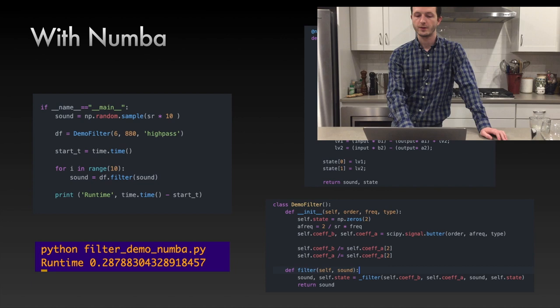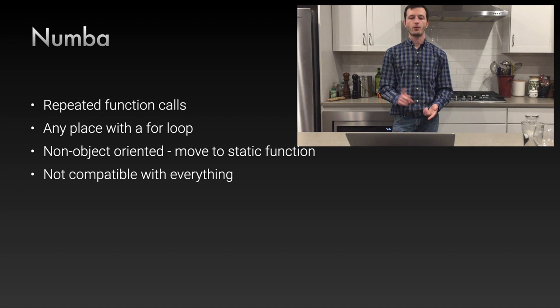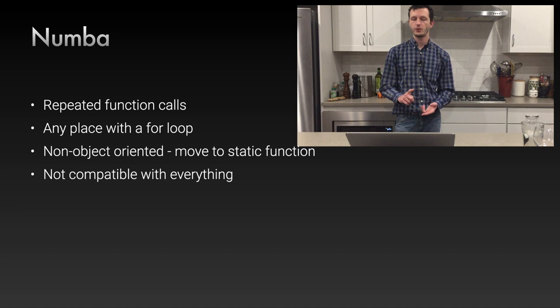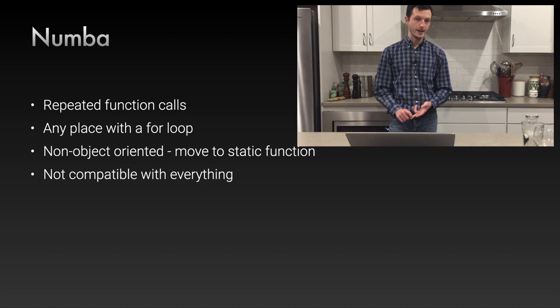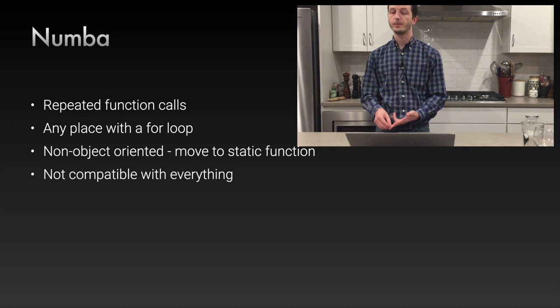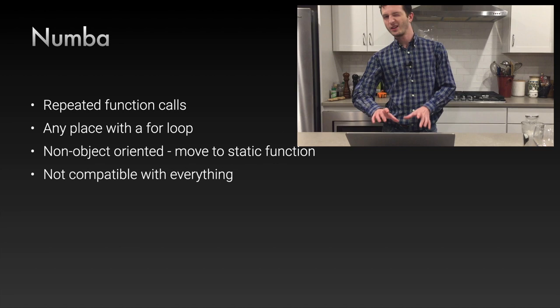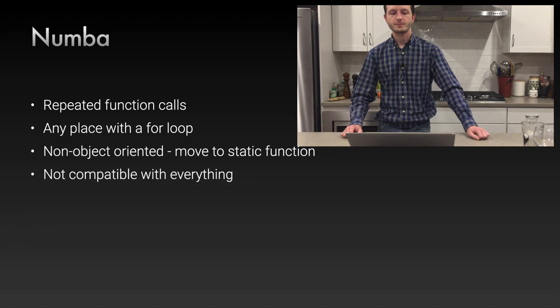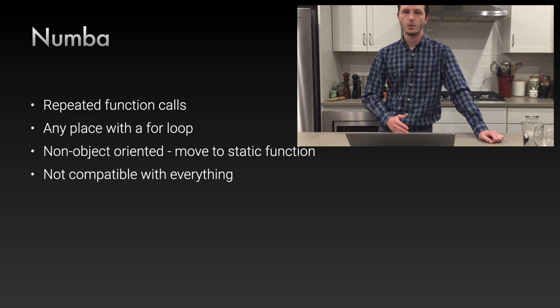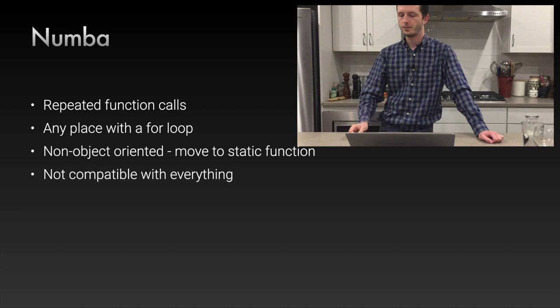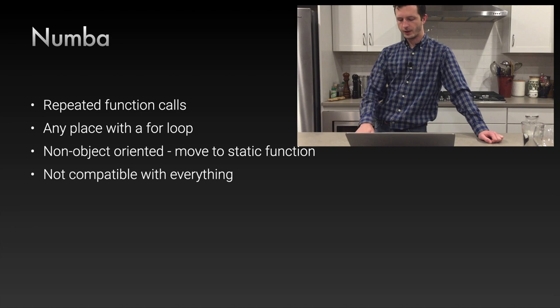Numba is great for repeated function calls since it compiles on the first call, and great anywhere you have for loops since that is pure Python. NumPy already has a C++ backend, so compiling it to machine code won't speed it up as much. If you're using NumPy but not in a vectorized sense — if you have for loops — Numba will speed that up a lot. It's non-object-oriented and doesn't work well with Python objects since it needs to know the types of everything. It's also not compatible with many SciPy functions or NumPy keyword arguments.